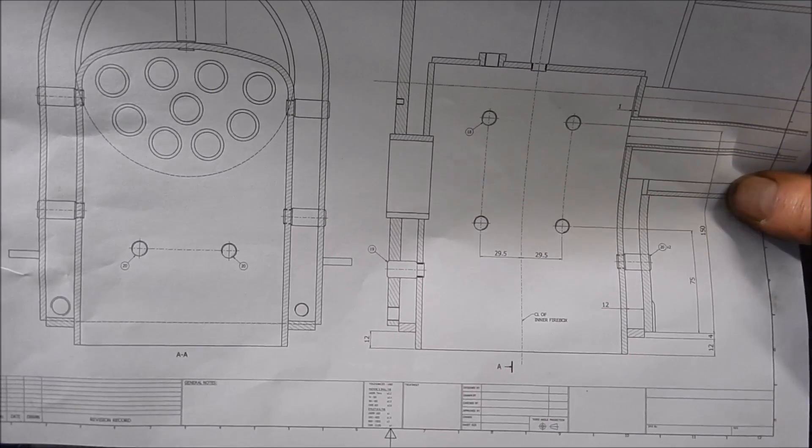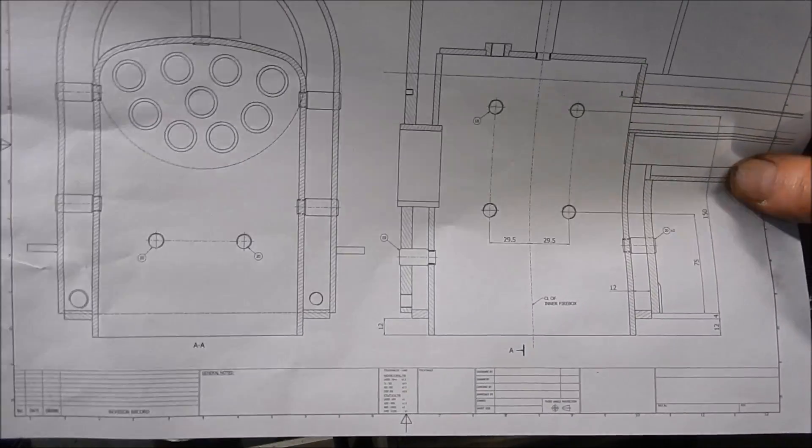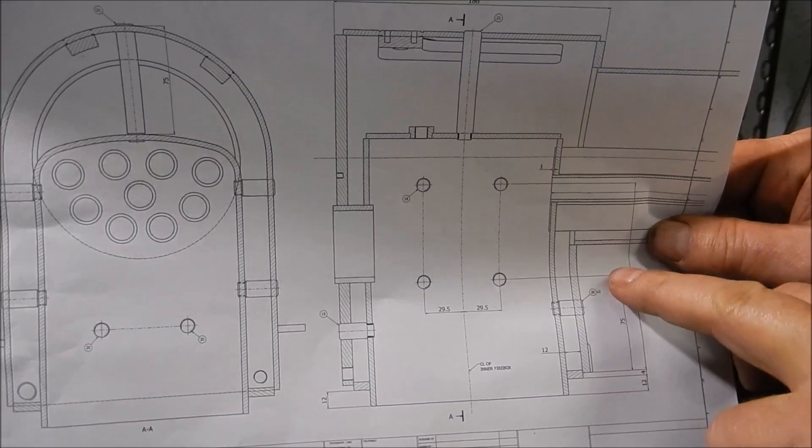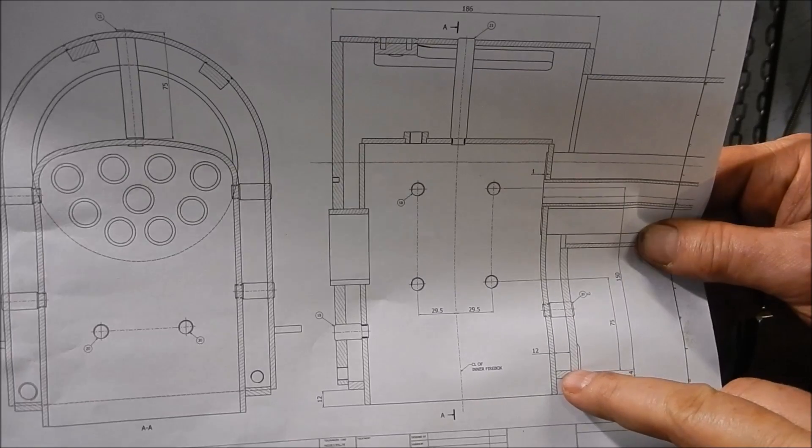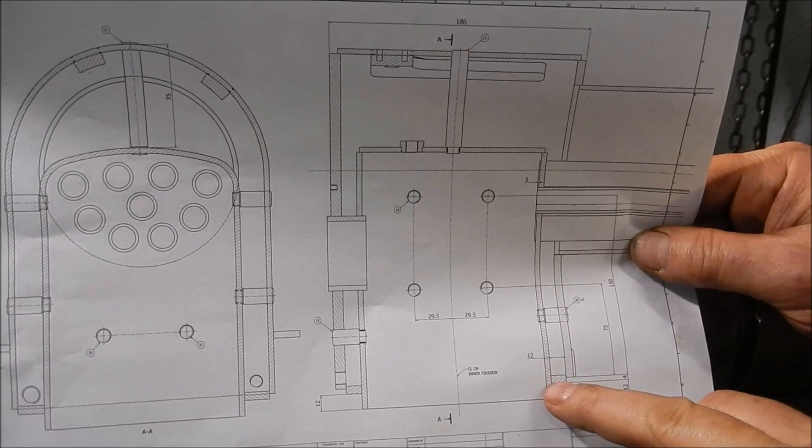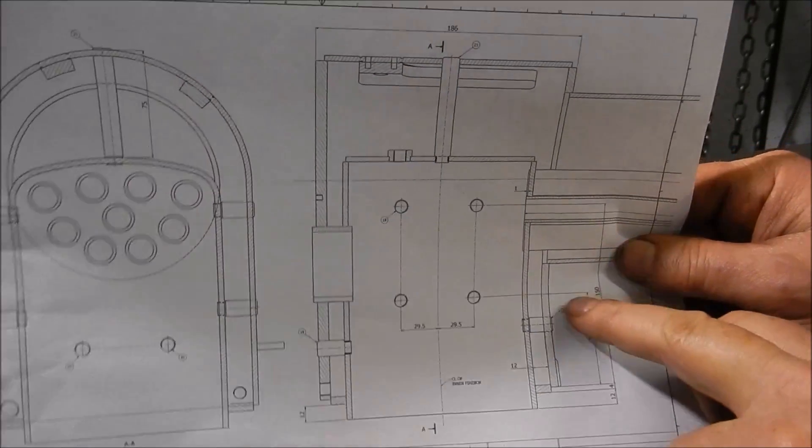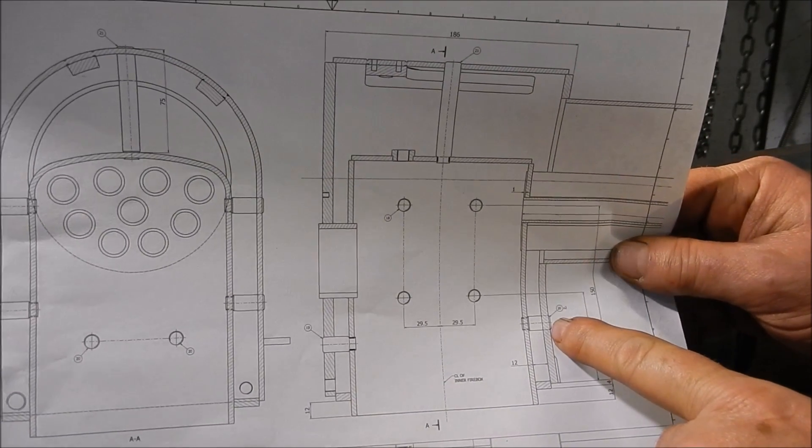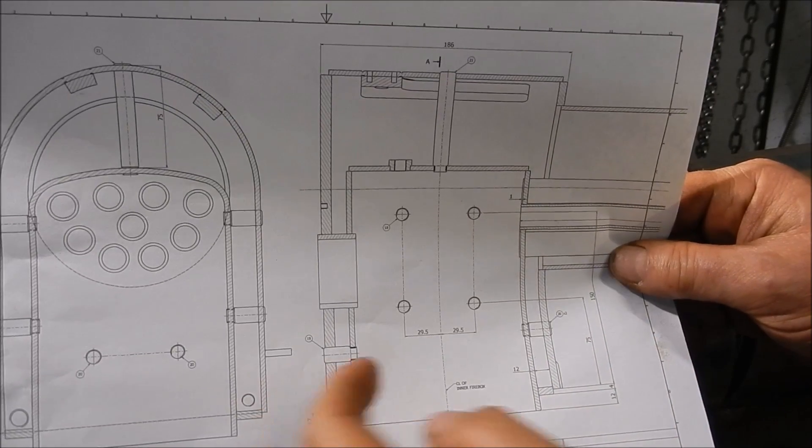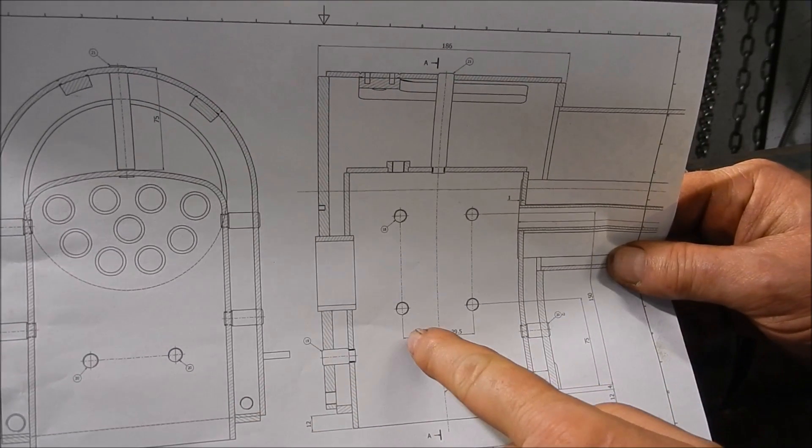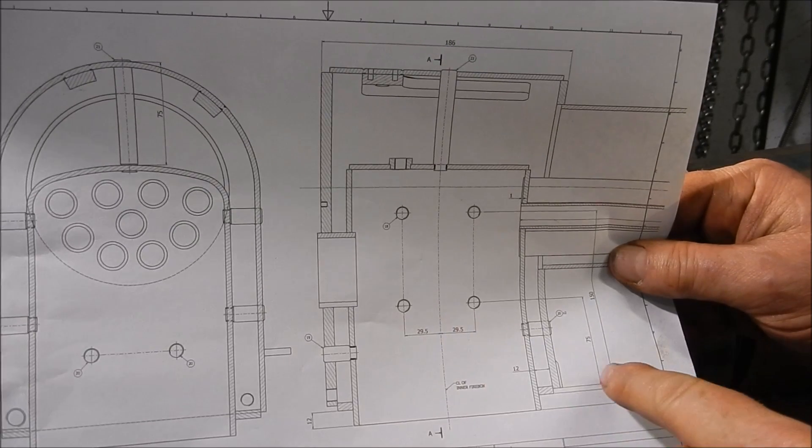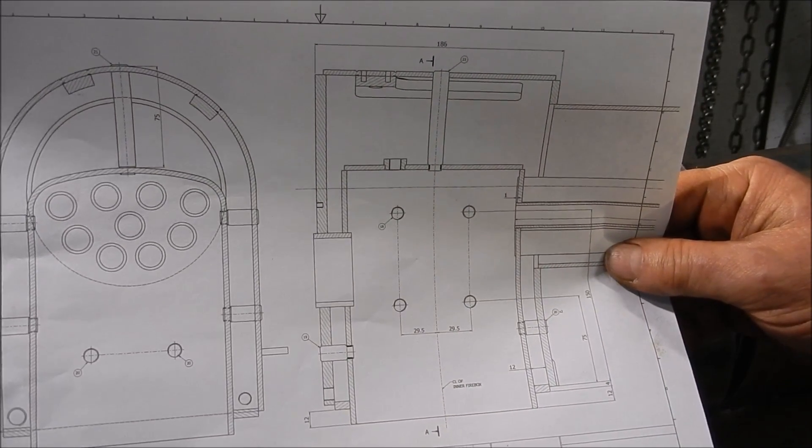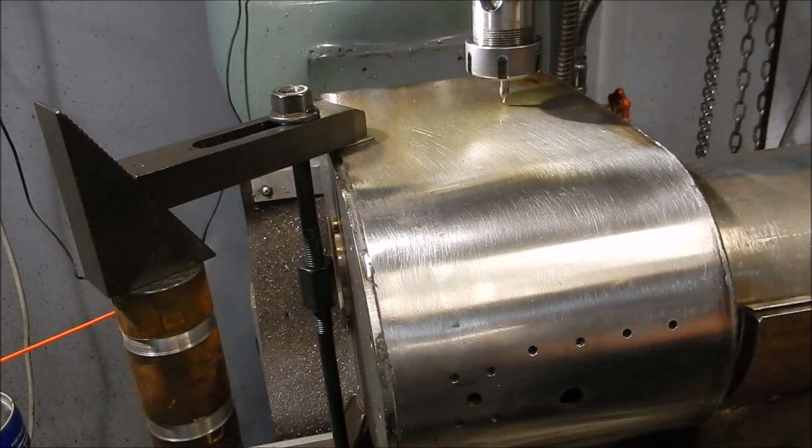Well, this is the layout for the stays for the side of the firebox. So we're coming up 75mm up from one of the side plates. So that's the foundation ring on there. We're up 4mm above that, then 75mm and then 150mm for the second set. And we're even stevens, central, between the two outer plates. 29.5mm split between the centre. As I said, 75mm up and 150mm up. So let's go through and we'll centre drill those first.